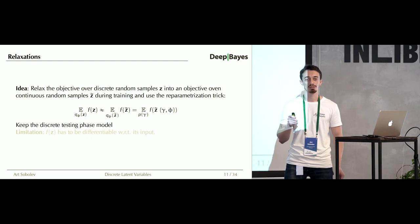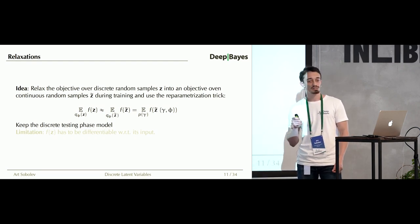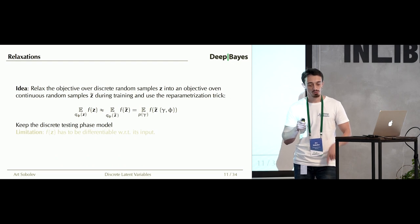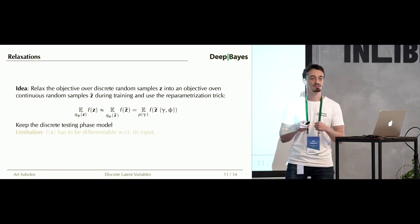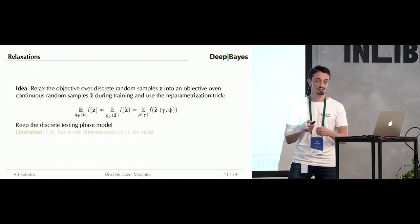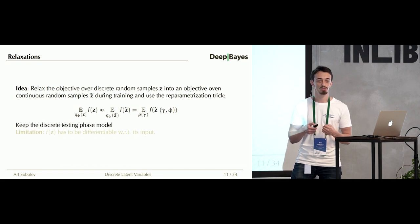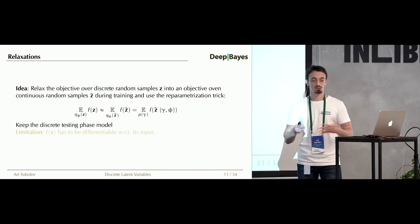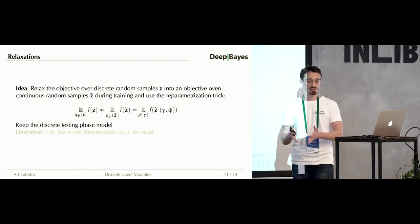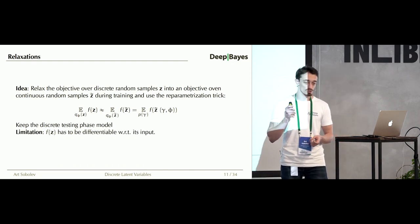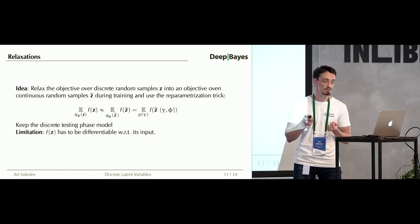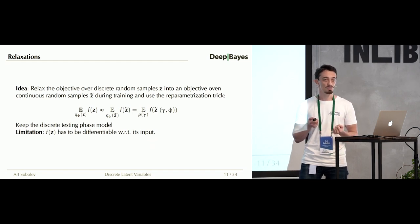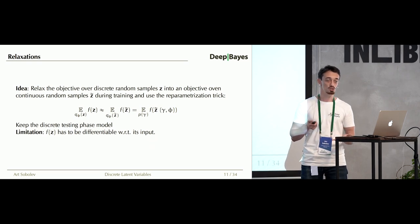We can then reparameterize this continuous Z-tilde using some independent standard noise gamma, so Z-tildes are obtained as a deterministic transformation of gammas. Importantly, although we switch from the discrete model to the continuous one during training, we still want to leverage all the benefits of the discrete case during the testing stage — we train the continuous model and then evaluate the discrete model. Also, since we seek to use the reparameterization-based gradient estimator, the function f now has to be differentiable with respect to its input.